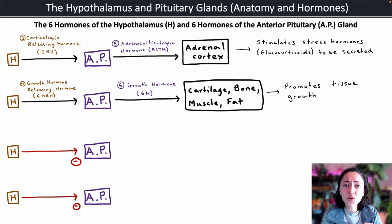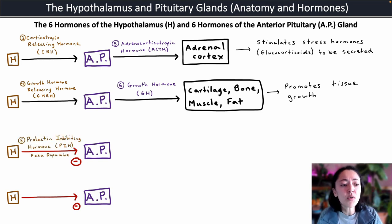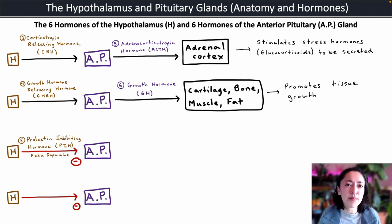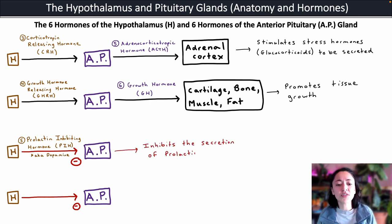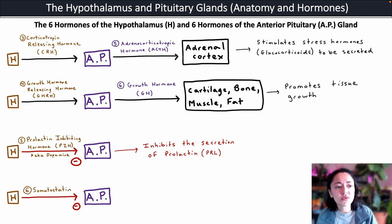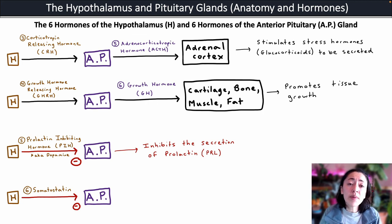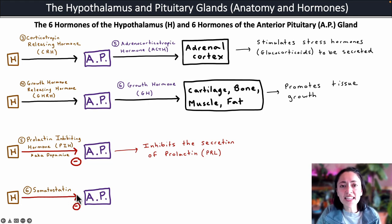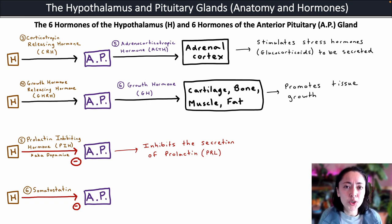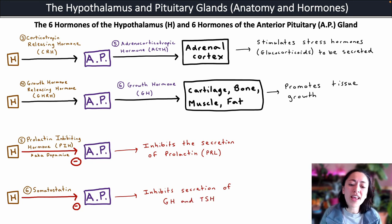The last two hormones secreted by the hypothalamus are inhibitory hormones. The first is prolactin-inhibiting hormone or PIH, also known as dopamine. Because of its effect on the anterior pituitary gland, it's given a separate name — PIH — and it inhibits the secretion of prolactin from the anterior pituitary gland. The second inhibitory hormone is somatostatin: 'somato' means body and 'statin' means to inhibit. When somatostatin is secreted by the hypothalamus and targets the anterior pituitary gland, it inhibits the secretion of growth hormone and thyroid stimulating hormone.